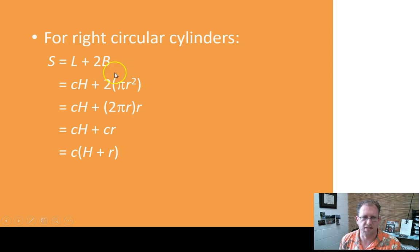2πr² is the same as 2π times π times r times r. If I group it this way, what's 2πr? 2πr is the circumference. So it's the same thing as the circumference times the radius. So circumference times the radius plus circumference times the height would be the same as circumference times the height plus the radius.